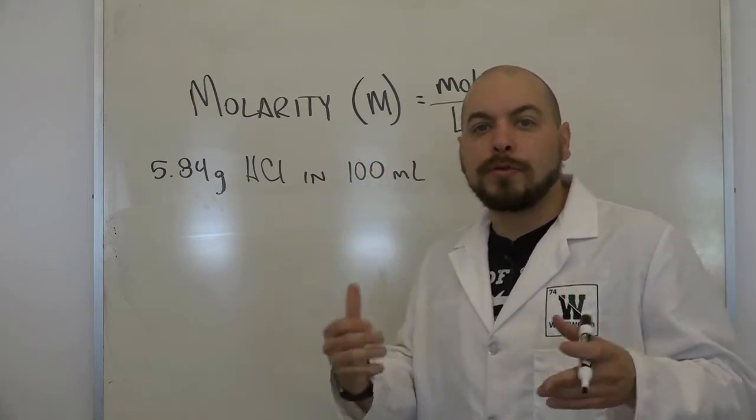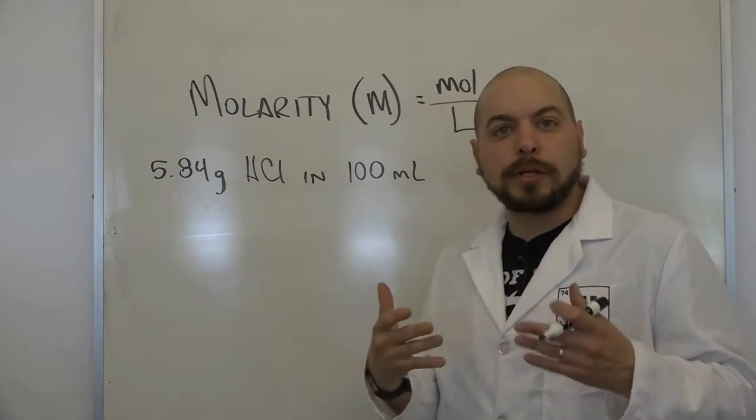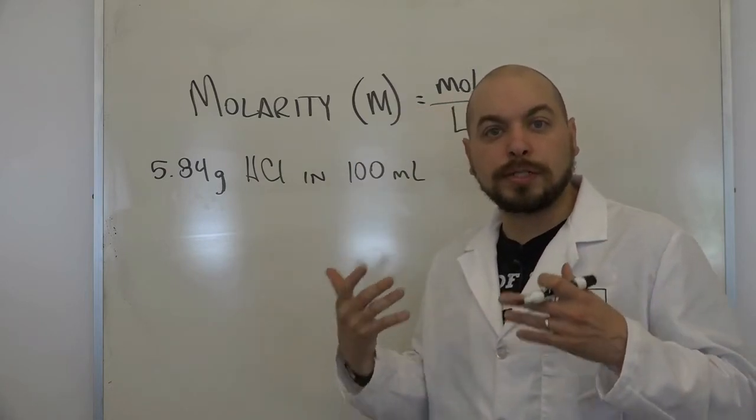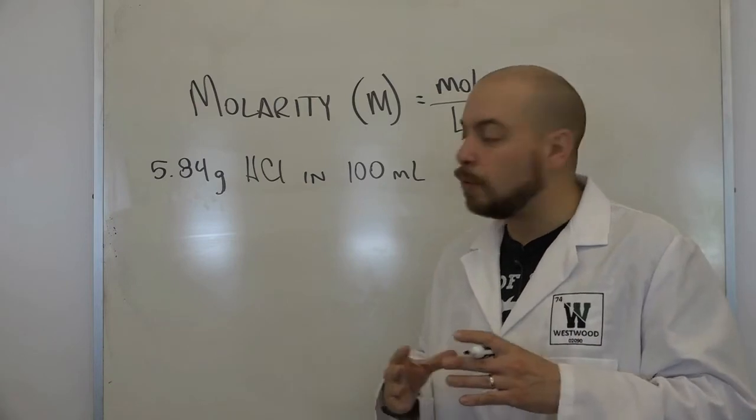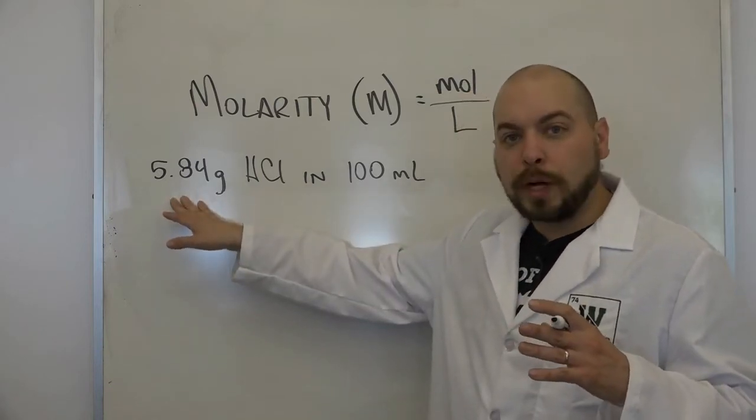Remember, our final unit molarity needs moles per liter. That's why we're going to do each of these two different conversions initially to be able to get our final unit. So 5.84 grams of HCl.